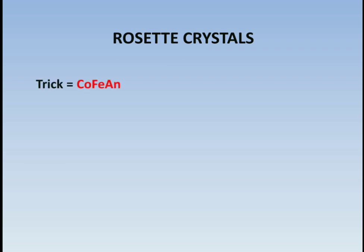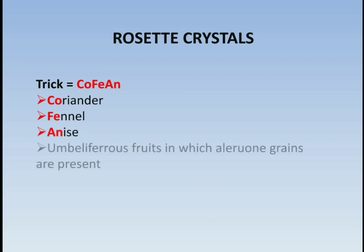The next is rosette crystals. The trick is 'coffin' — Co denotes coriander, F denotes fennel, and AN denotes anise. Most of the umbelliferous fruits in which aleurone are present also show rosette crystals.